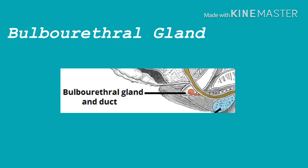The paired bulbourethral glands are small — about the size of a pea — and located near the base of the penis. A short duct from each gland enters the proximal end of the penile urethra. In response to sexual stimulation, the bulbourethral glands secrete an alkaline mucus-like fluid. This fluid neutralizes the acidity of any urine residue in the urethra, helps to neutralize the acidity of the vagina, and provides some lubrication for the tip of the penis during intercourse.